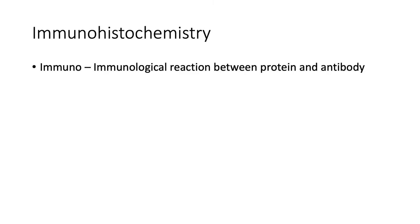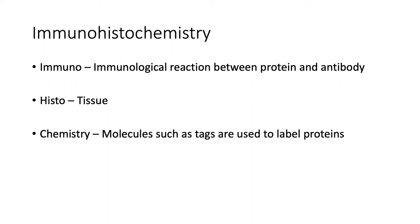Immuno refers to the immunological reaction that takes place in the process between a target protein and an antibody. Histo refers to the fact that the process will utilize a specific tissue where we want to identify a protein of interest, and chemistry refers to the fact that different molecules are utilized in the technique, such as fluorescent tags.